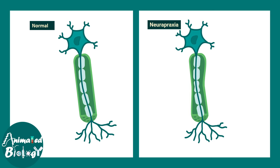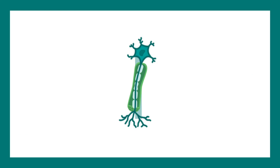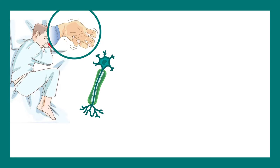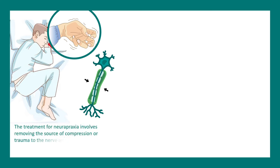The first type of injury is neuropraxia. In this case there is a compression of the nerve — the entire myelin sheath is there but it's just compressed at a particular point. It's a reversible injury that means it can be treated quickly. One live example is due to a sleeping posture — you might have sensed that tingling sensation in your hand in the middle of the night. That is exactly an example of neuropraxia, and it is the most mild form of injury you can expect.